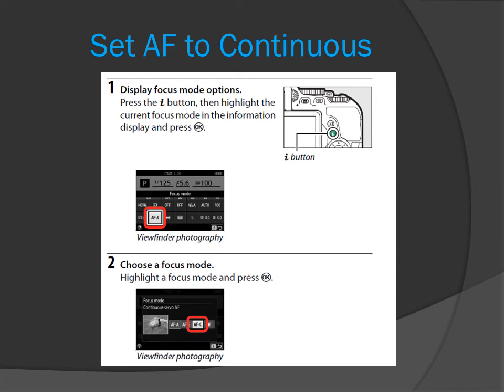Set autofocus to continuous. Press the I button on the back of the camera — on the back screen where that red square is on the top picture. Tap that and you'll bring up the second screen. Tap AFC — C for continuous — or use the D-pad to move the cursor to AFC and then press OK.